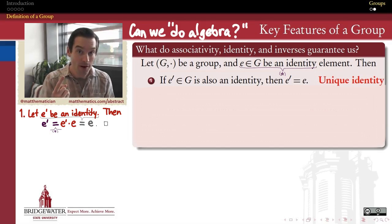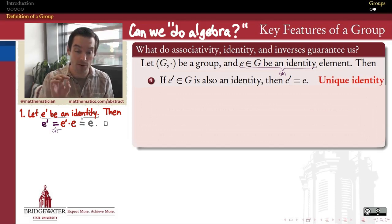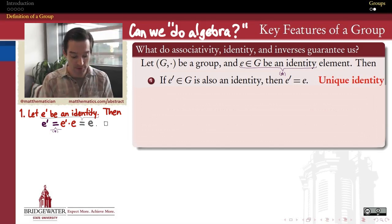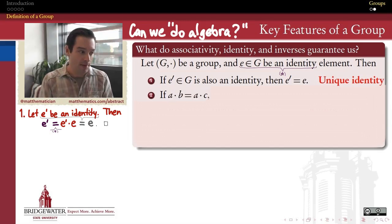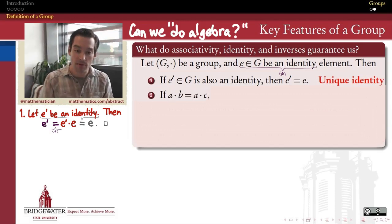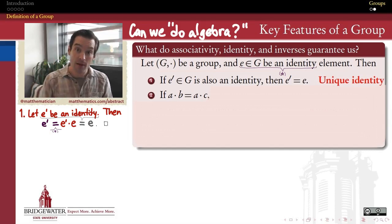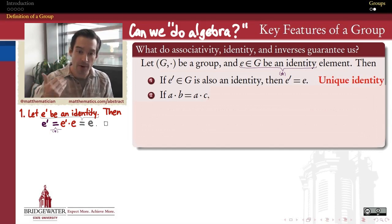And we know every group has one, because that's one of the assumptions that goes into the definition of a group. So every group has a unique identity element. Now, one of the most fundamental things we need to be able to do if we're going to do algebra is to solve equations. So can we solve equations inside of group land?